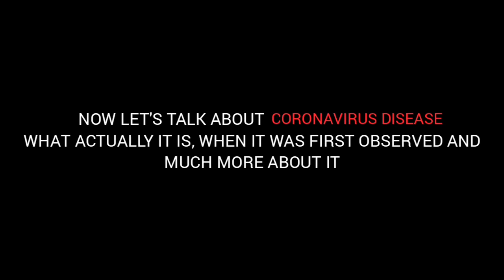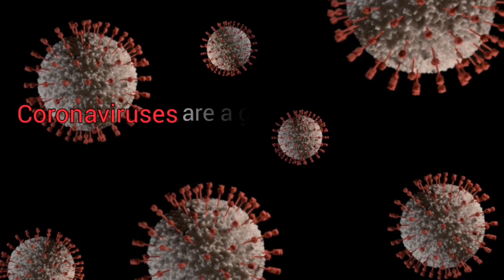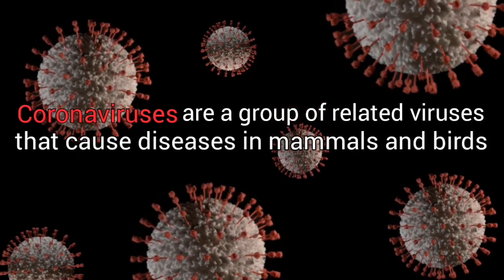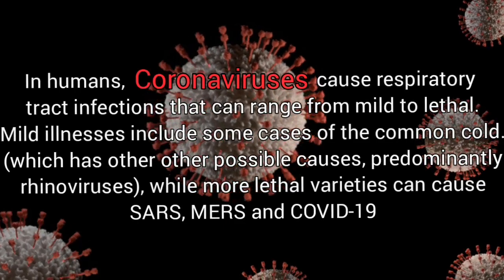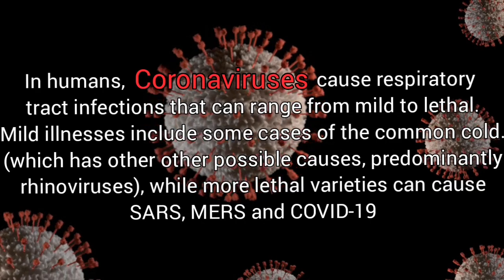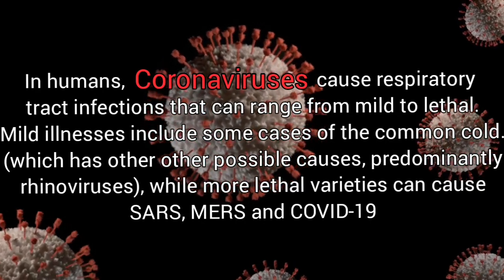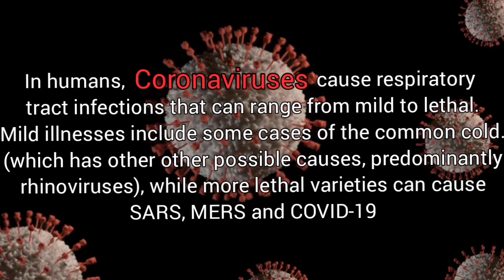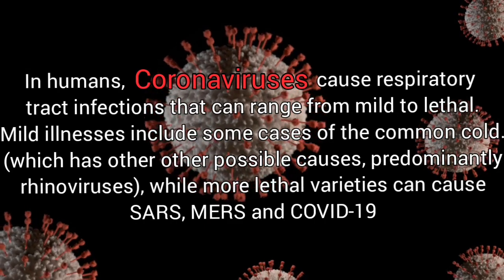Now let's talk about coronavirus disease — what it actually is and when it was first observed. Coronaviruses are a group of related viruses that cause diseases in mammals and birds. In humans, coronaviruses cause respiratory tract infections that can range from mild to lethal. Mild illnesses include some cases of the common cold, which has other possible causes, predominantly rhinoviruses, while more lethal varieties can cause SARS, MERS, and COVID-19.